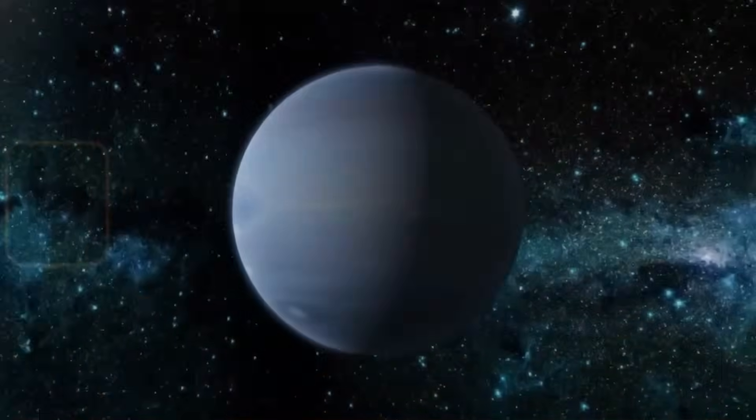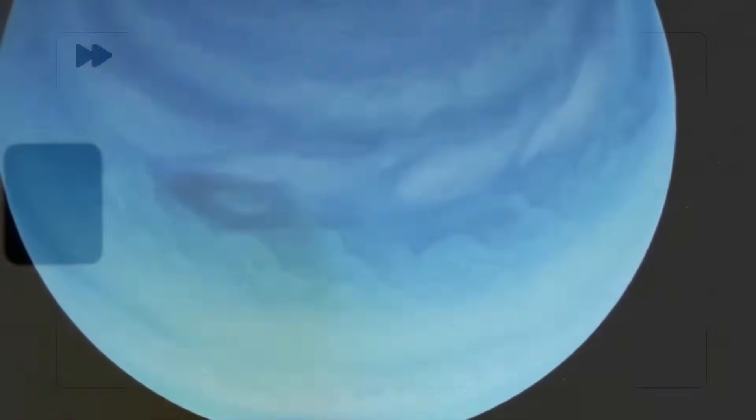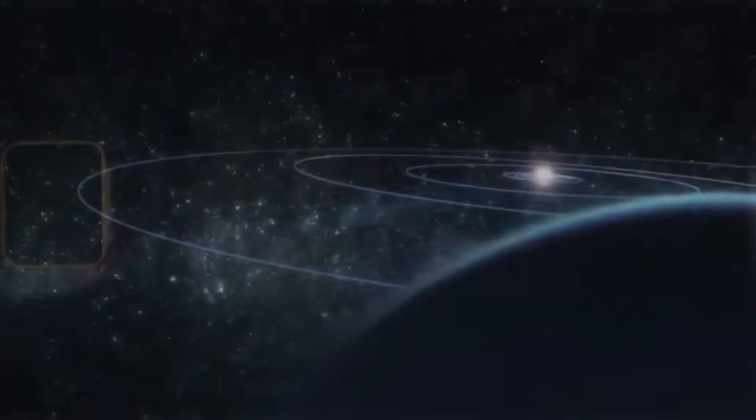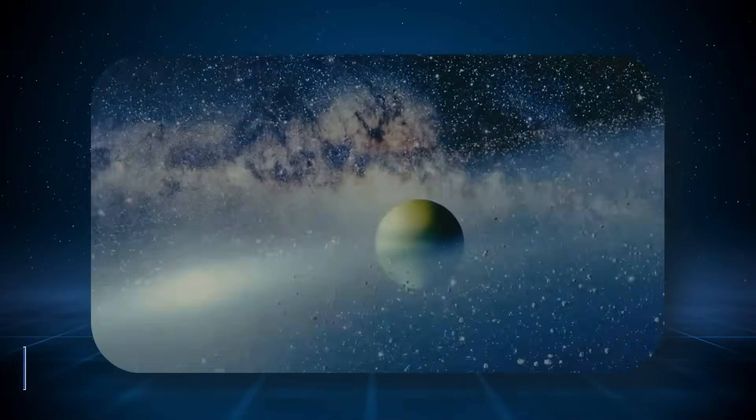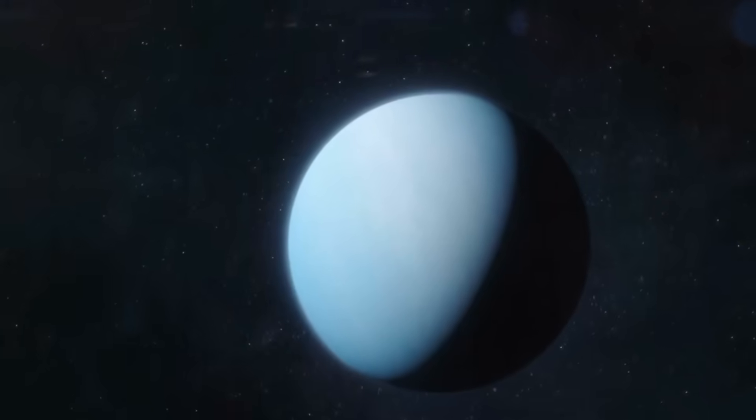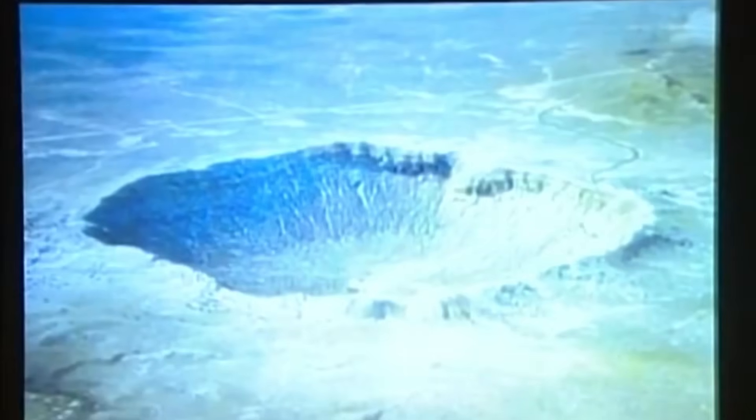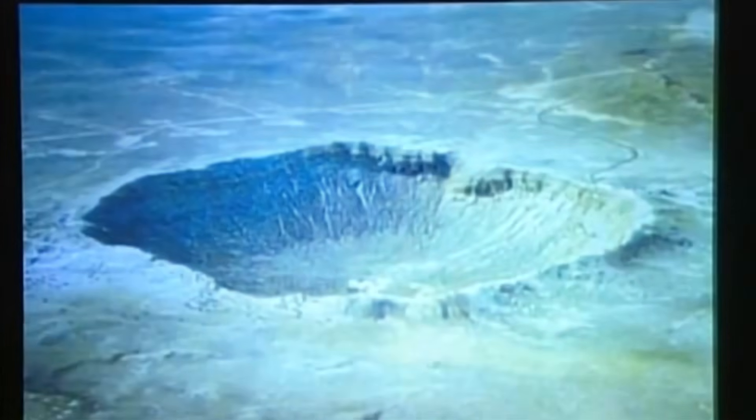A further layer to Tyson's message was the re-evaluation of Neptune's place in planetary formation theories. Traditionally, the outer planets were thought to have formed from accreting gas and dust beyond the so-called frost line in the early solar system. However, Tyson posited that Neptune's mass and composition might not match these expectations. It may be a kind of planetary migrant, a body that formed in a different region and was later displaced outward during the chaotic reshuffling of the young solar system.